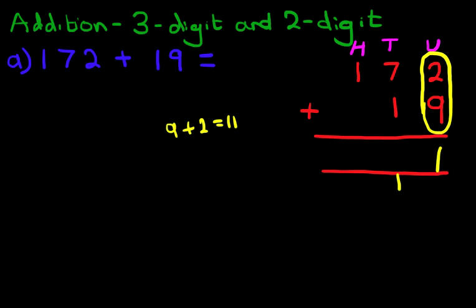We're now going to add the tens column. The tens is this one over here. 7 plus 1. And don't forget the 1 over here. So what we have is 7 plus 1 plus 1. So 7 plus 1 is 8. So 8 plus 1 is 9.